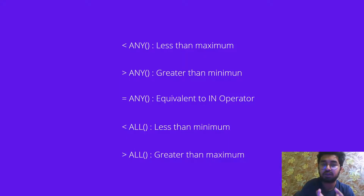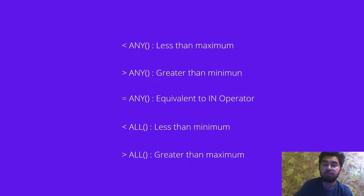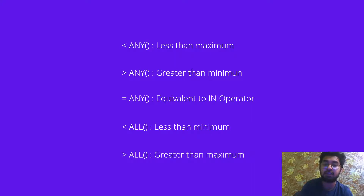When we use the ANY or ALL operator, we get a list of values in return. The first condition is that the value on the left must be smaller than any of the values, so it must be less than the maximum. The second one is the left value must be larger than any value, which will be greater than the minimum. The third condition uses the equal sign with ANY, which acts like the IN operator we have already covered.